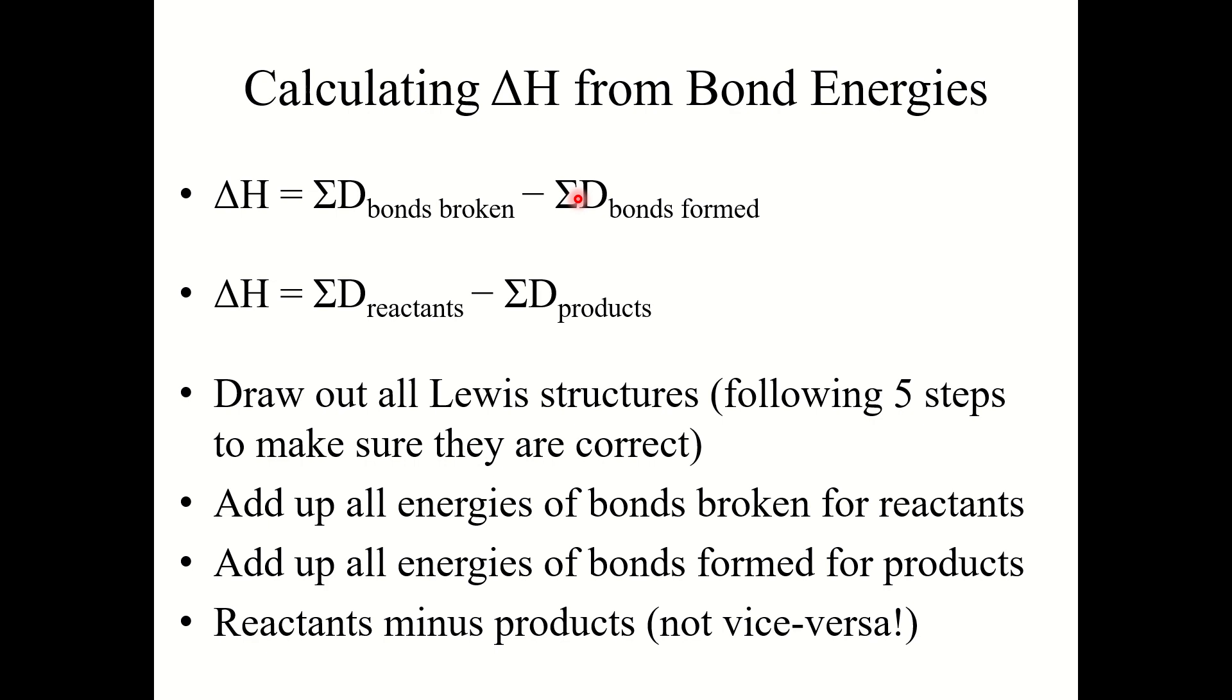When you're using heat of formations, those delta H values, it's products minus reactants. When you're using bond energy values, it's the reverse. It's reactants minus products.